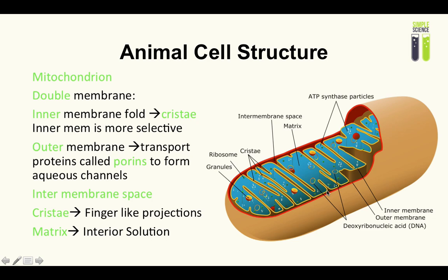The intermembrane space is the space between the inner and outer membrane — an important space you'll need to know in A2, but also relevant for AS. Cristae are these finger-like projections. The matrix is the interior solution, and within it there are granules, ribosomes, and ATP synthase — an enzyme needed for the respiration reaction.